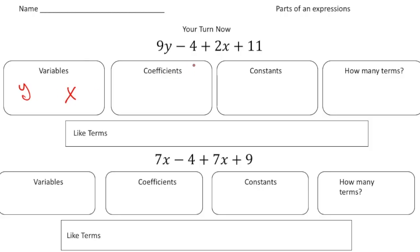The coefficients. Remember those are what's in front of the variables. So here we have 9y. So 9 is a coefficient. And then we also have a 2x. So the 2 is also a coefficient.